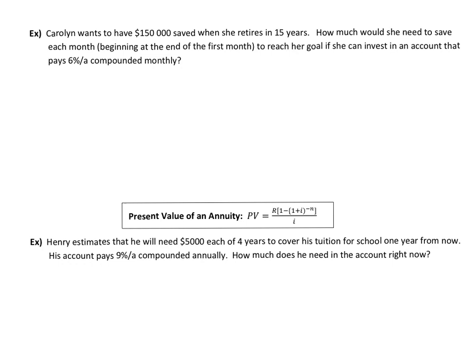To reach her goal if she can invest in an account that pays 6% compounded monthly. Again, the compounding period matches the payment period and it is at the end of each month. So let's figure out what we have here.